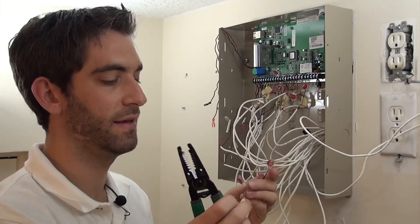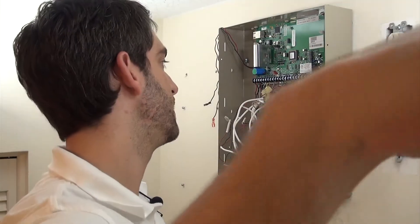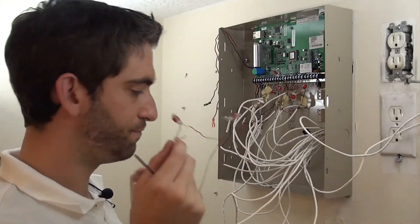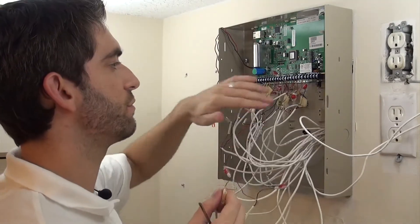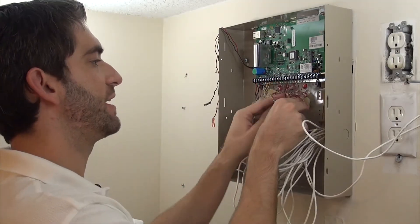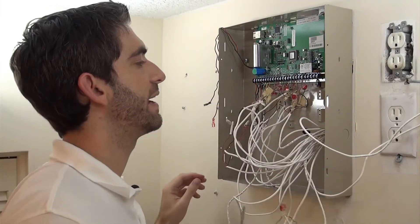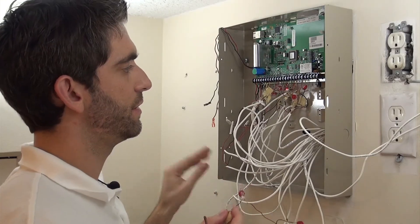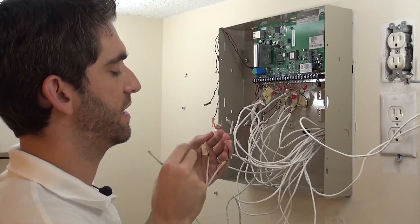Okay, that's connected. And this is the tricky part. So we've got our eight zones. We've run out of zones on the panel. You can add a 4219 zone expansion board if you would like or you're going to zone double, which is what we've been setting up for.